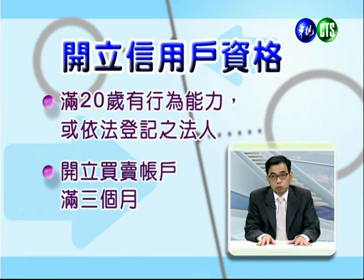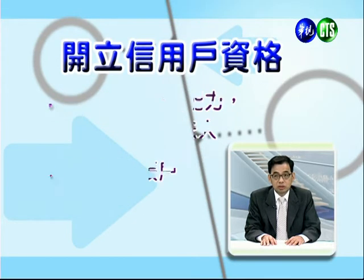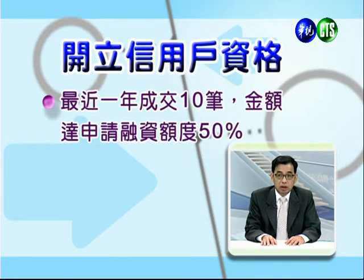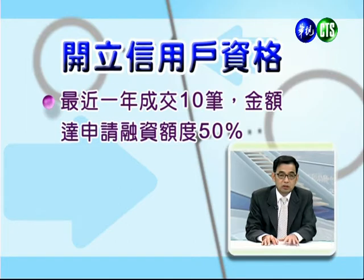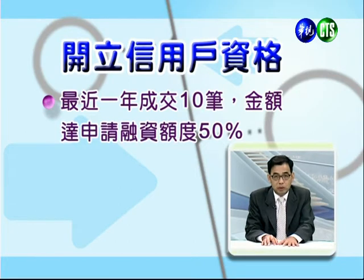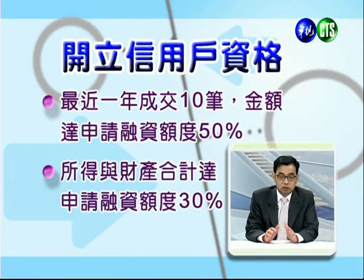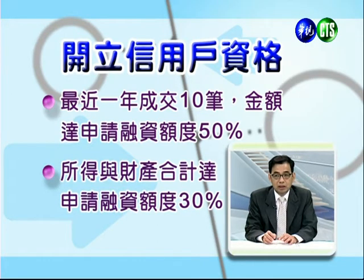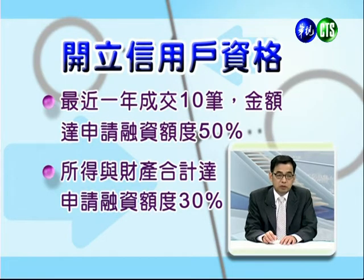所谓的信用交易简单来说就是融资买进股票以及融券放空股票。要取得信用户资格有几个条件：第一，你必须满20岁而且有行为能力；第二，你必须开户已经买卖满三个月以上才可以办理；第三，你最近一年的成交必须要有十笔以上。申请金额方面，若一年成交金额是一百万，融资额度可乘以50%即五十万。